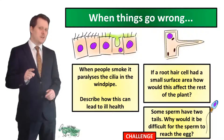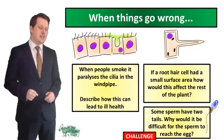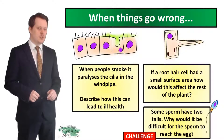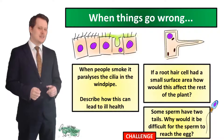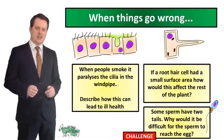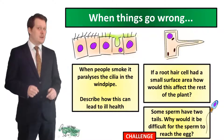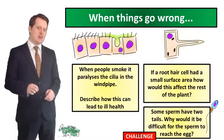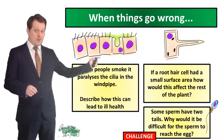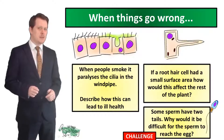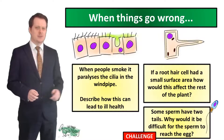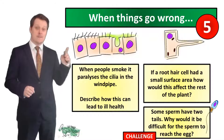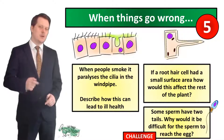Next we're going to look at the function of these cells and consider what problems arise if they go wrong. We have three situations. First, when people smoke it paralyzes the cilia in the windpipe — describe how this can lead to ill health. Second, a root hair cell with a small surface area — how will that affect the rest of the plant? For a challenge: some sperm cells have two tails — why would it be difficult for the sperm to reach the egg?